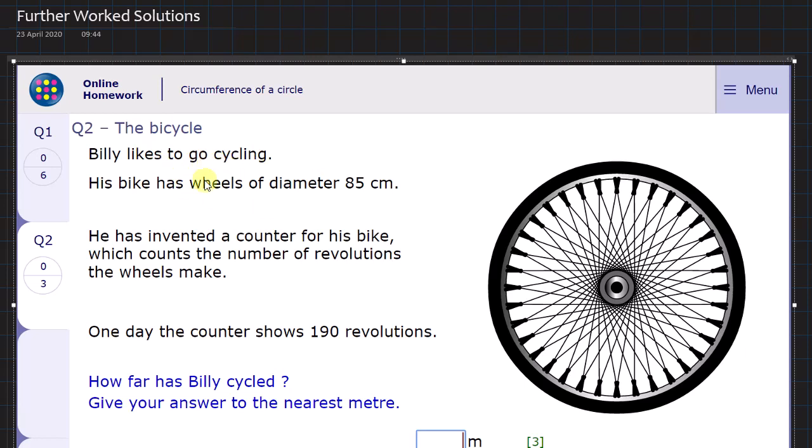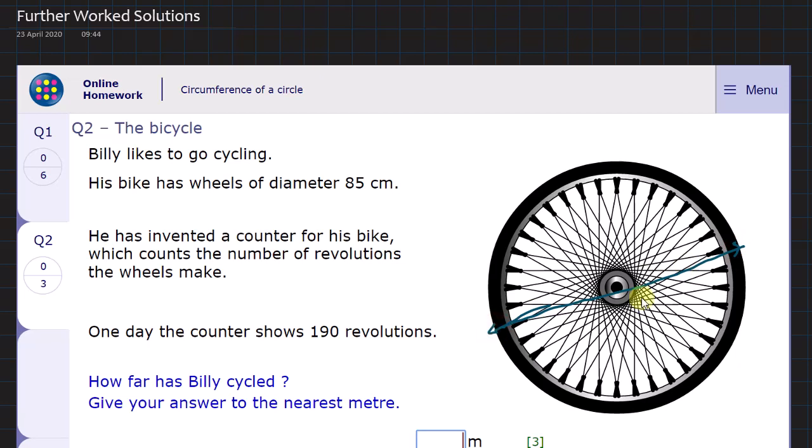Billy likes to go cycling. His bike wheel has a diameter of 85cm. That's the distance right across from one edge to the other through the middle. We know that distance now is 85cm.